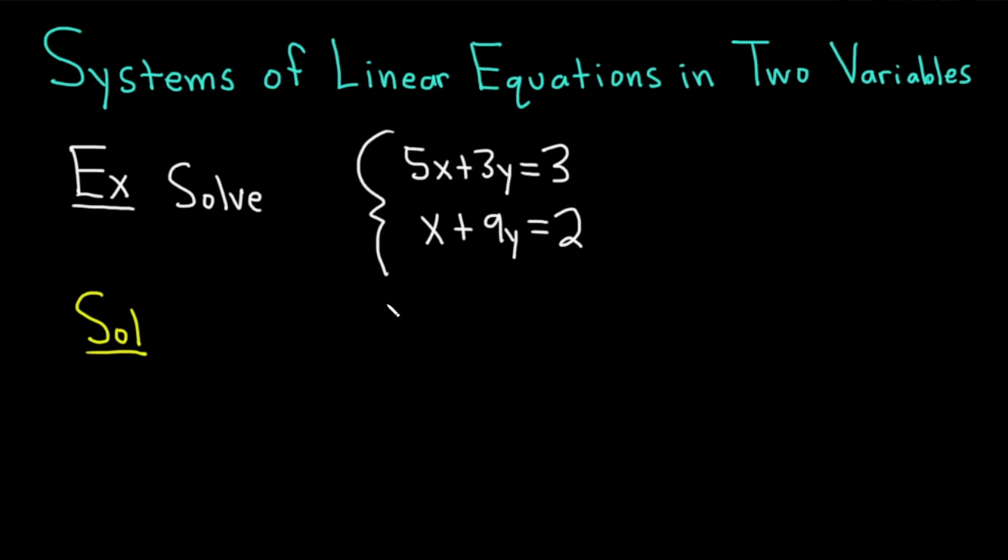There are a few ways to do this. I like to use what's called the elimination or the addition method. Basically, that means that you pick an equation and you multiply it by something so that when you add it to the other one, a variable cancels. For example, in this particular case, if we were to multiply the second equation by negative 5, we could add it to the first to get rid of the 5x. So let's go ahead and do that.